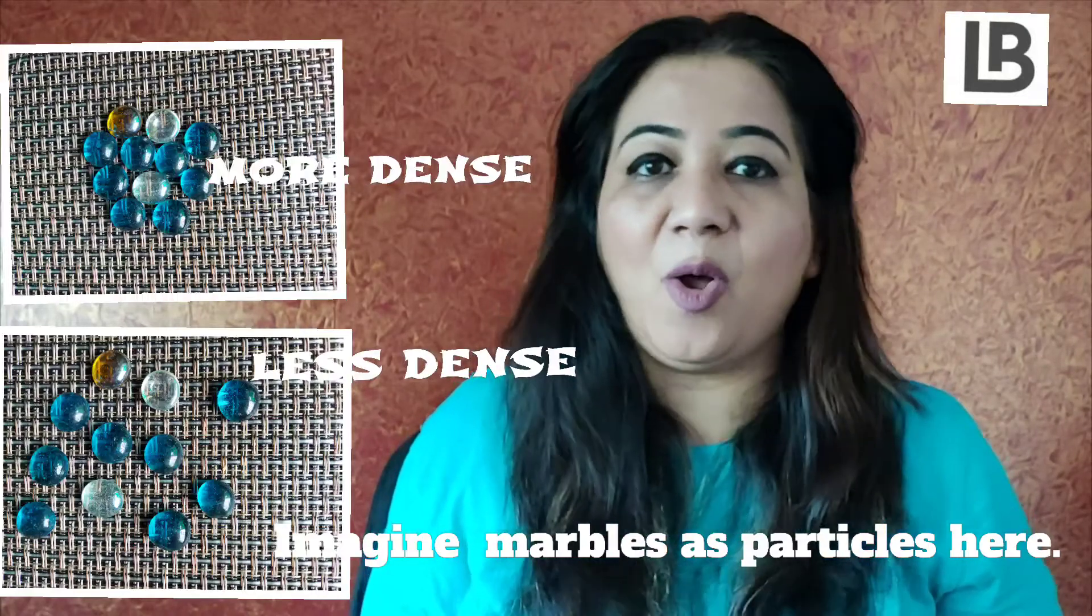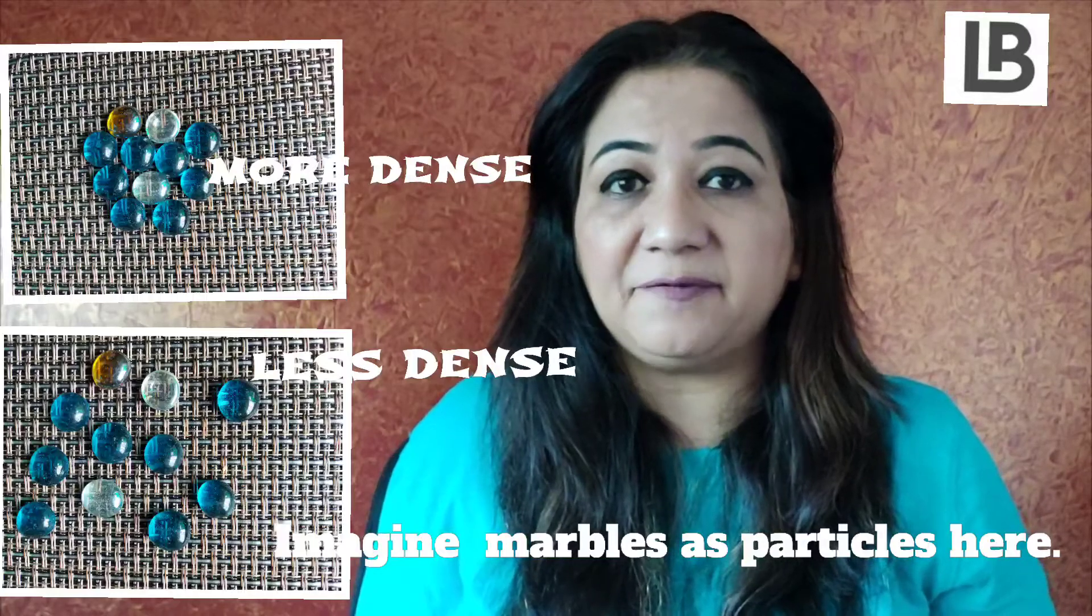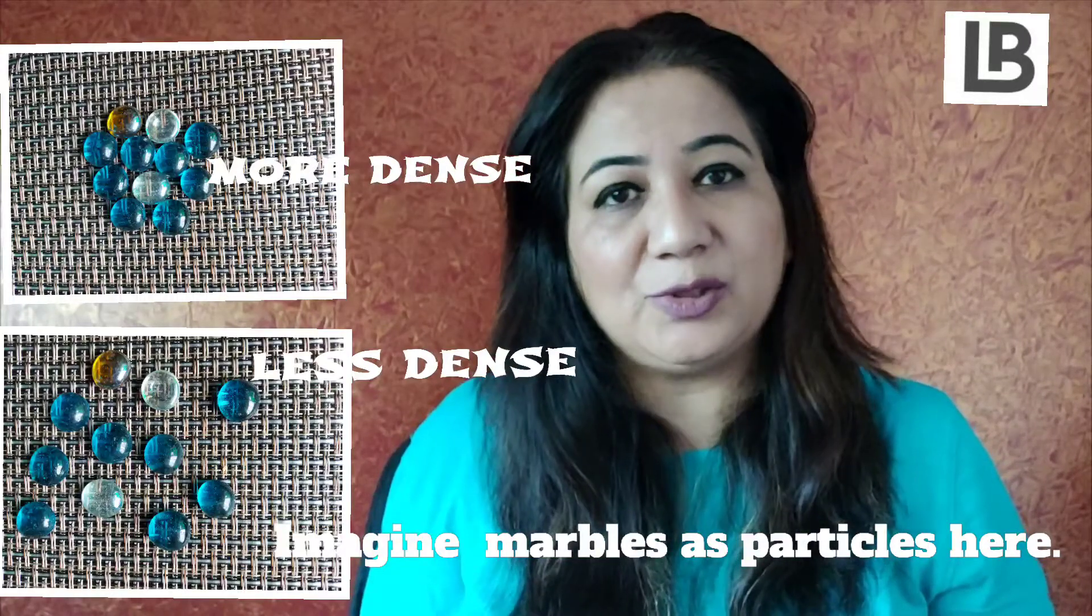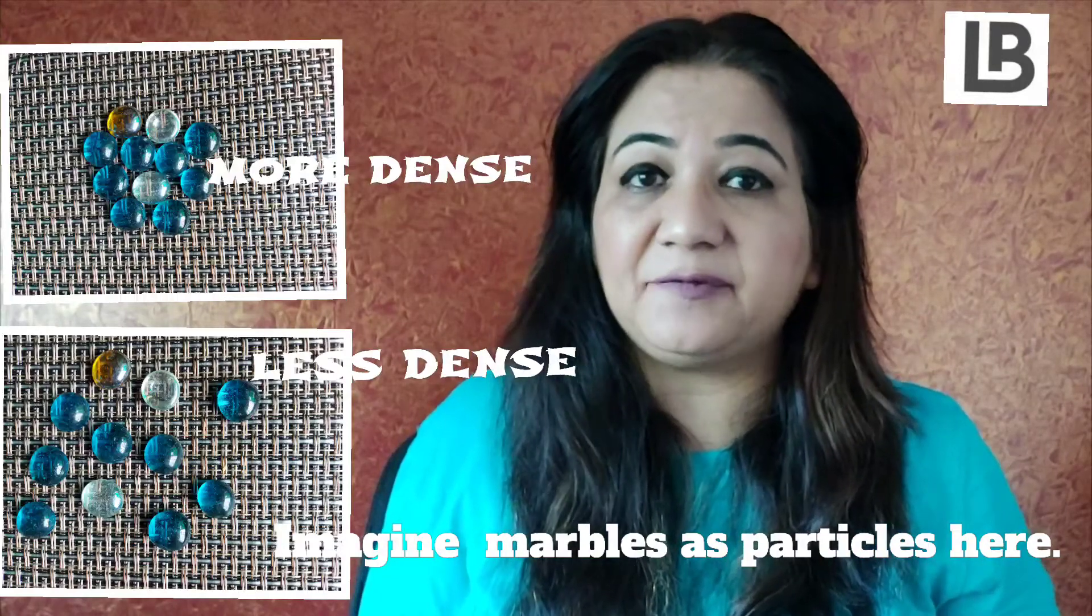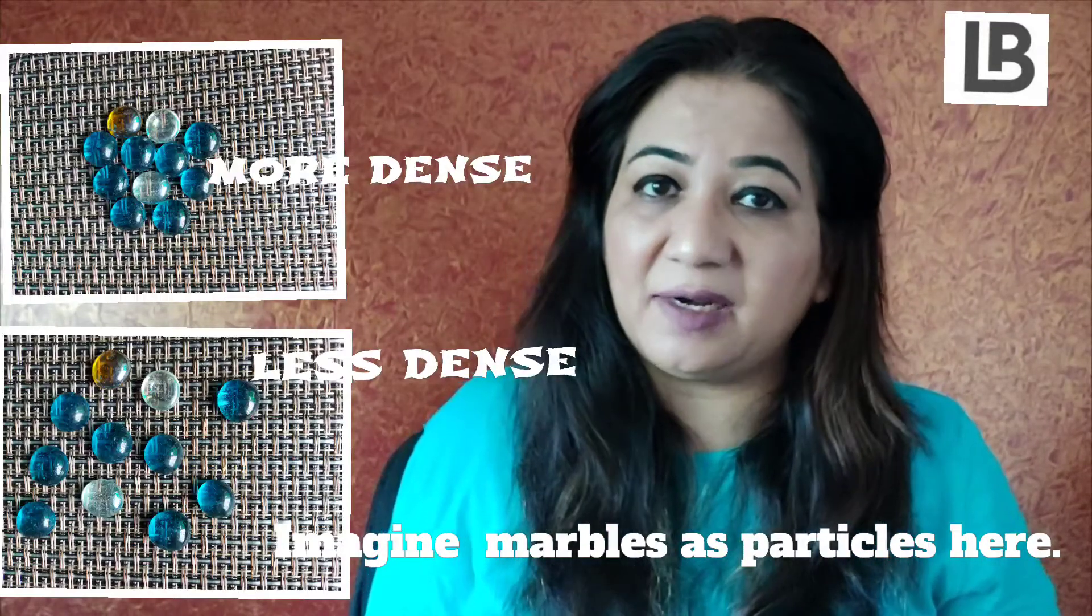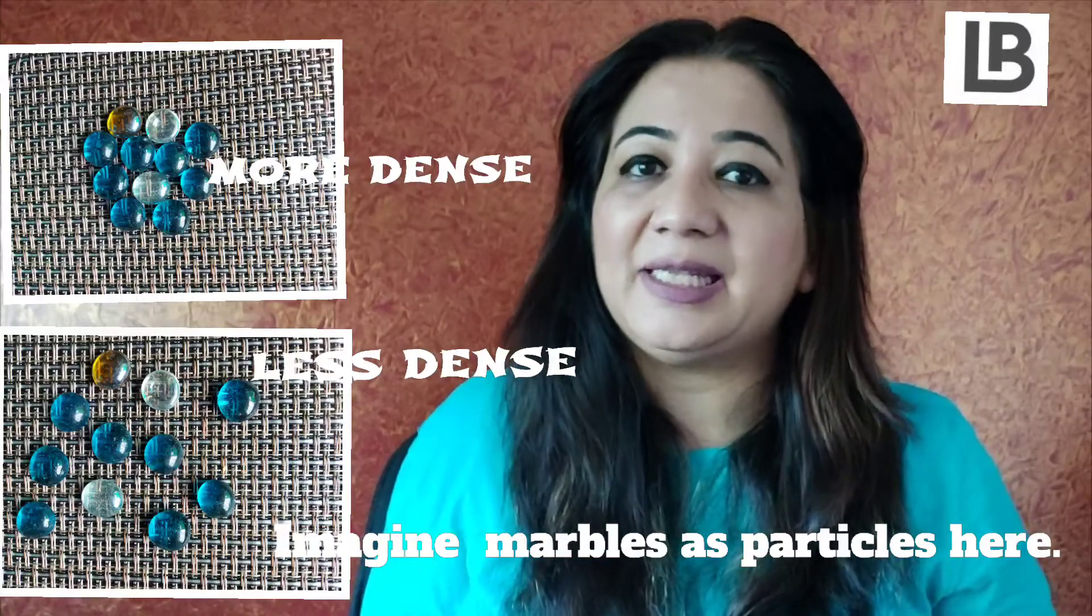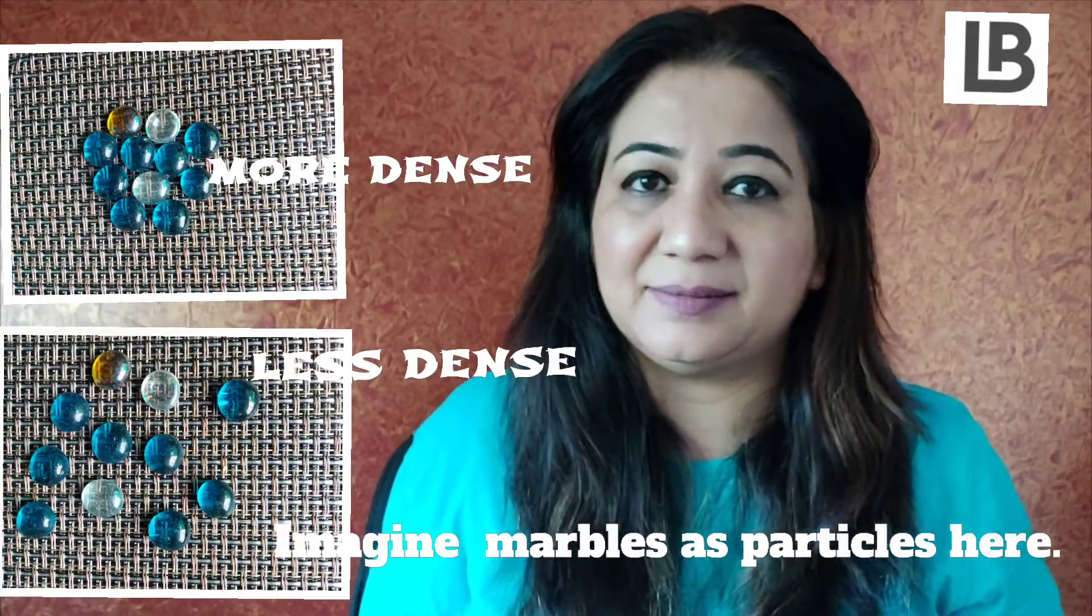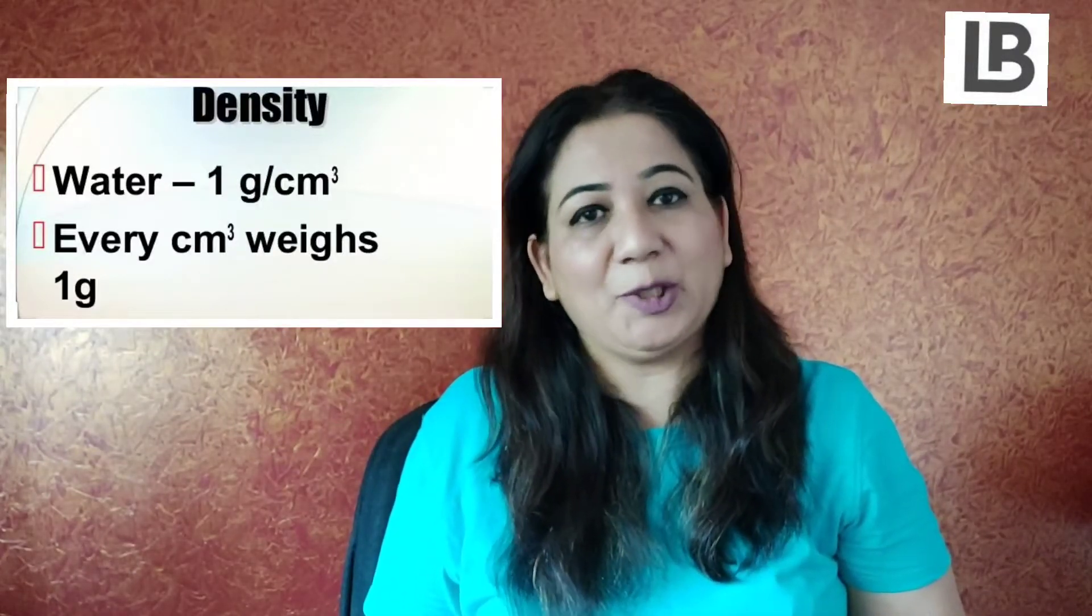So let's understand density in water in a simpler manner. All objects are made up of particles. If the particles are close to each other, the object is more dense. And if the particles are far away from each other, the object is said to be less dense. As I told you, density is mass per unit volume.